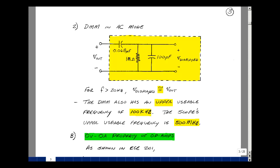Now the digital multimeter also has an upper usable frequency, about 100 kilohertz. In contrast, our oscilloscope has an upper usable frequency of about 500 megahertz. The scope is much better for looking at signals, but the digital multimeter is very accurate.